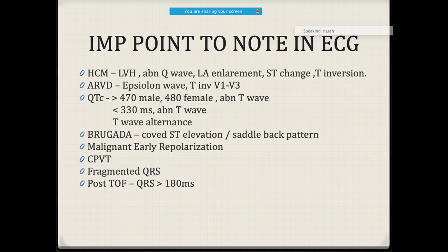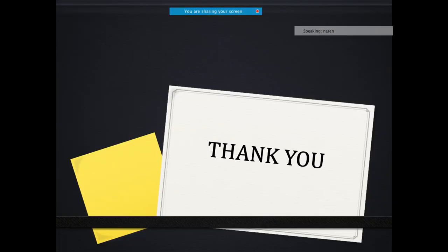Additional markers include malignant early repolarization, CPVT, fragmented QRS, and post-TOF repair QRS more than 180 milliseconds. ECG is a vital tool for detecting patients predisposed to sudden cardiac death, but it cannot diagnose all conditions — for example, premature atherosclerotic coronary artery disease or congenital coronary anomalies may not be identified by ECG alone.